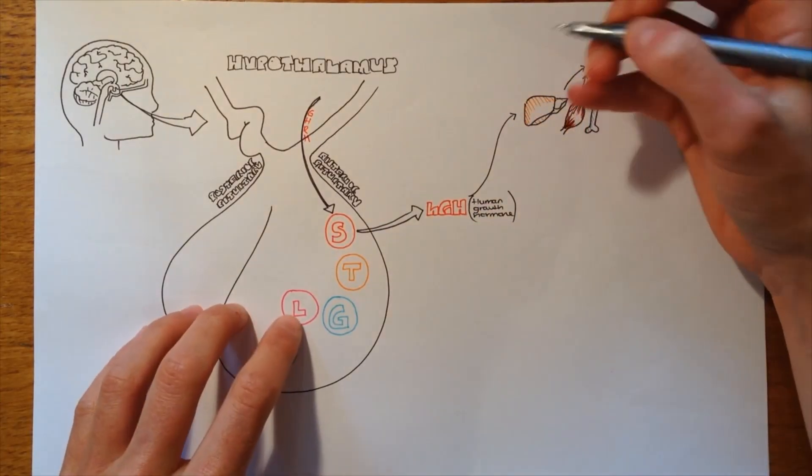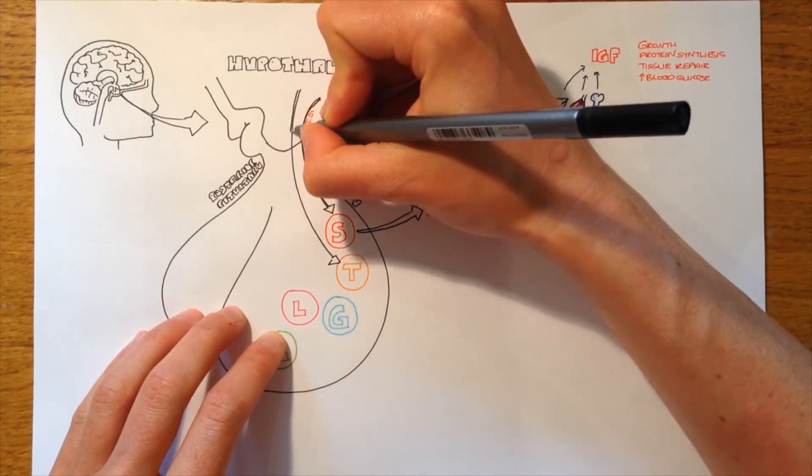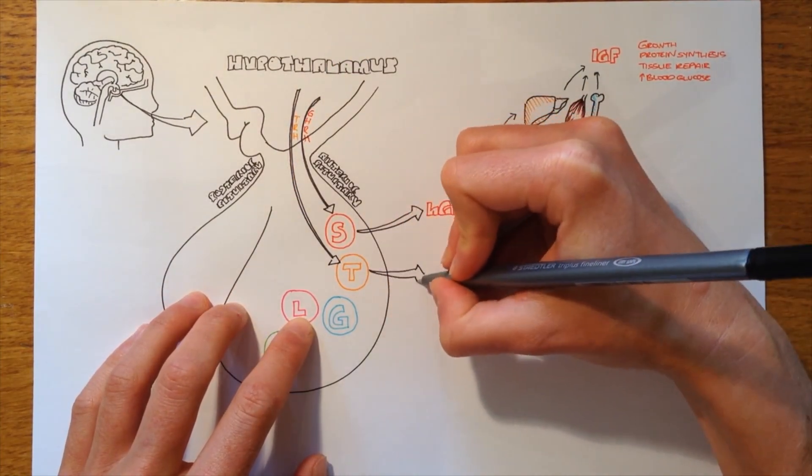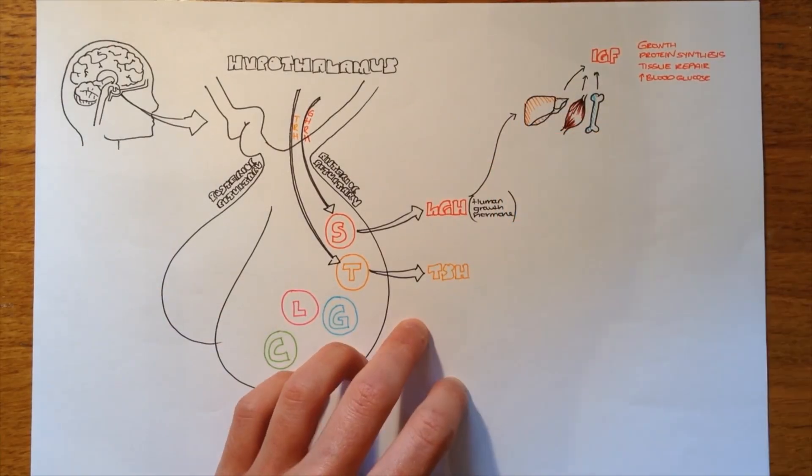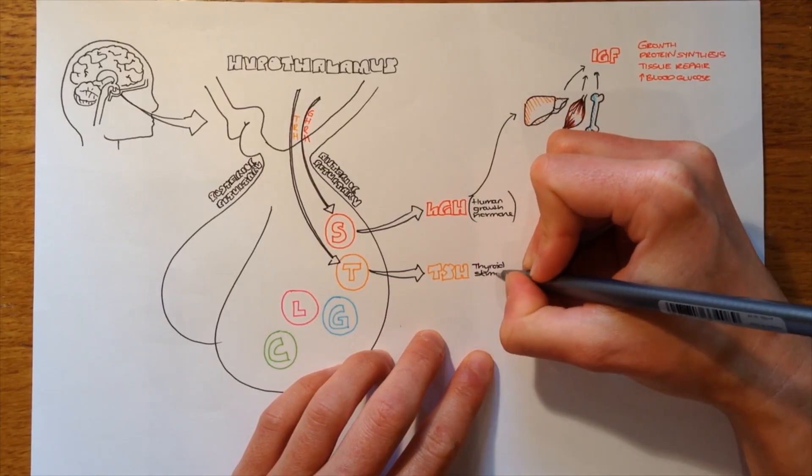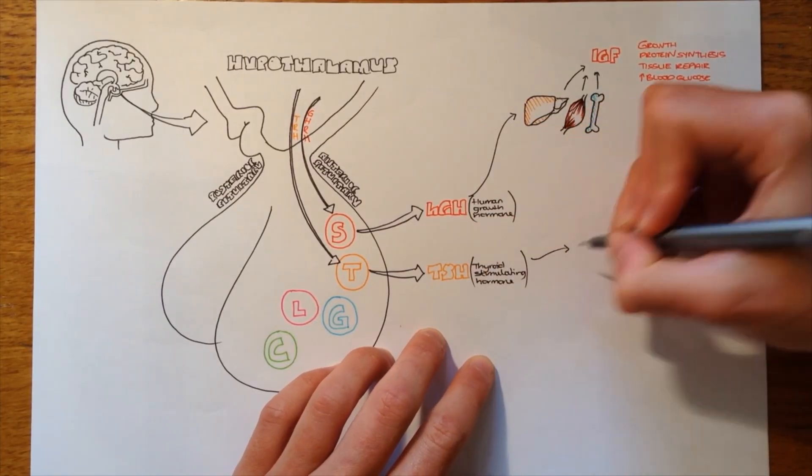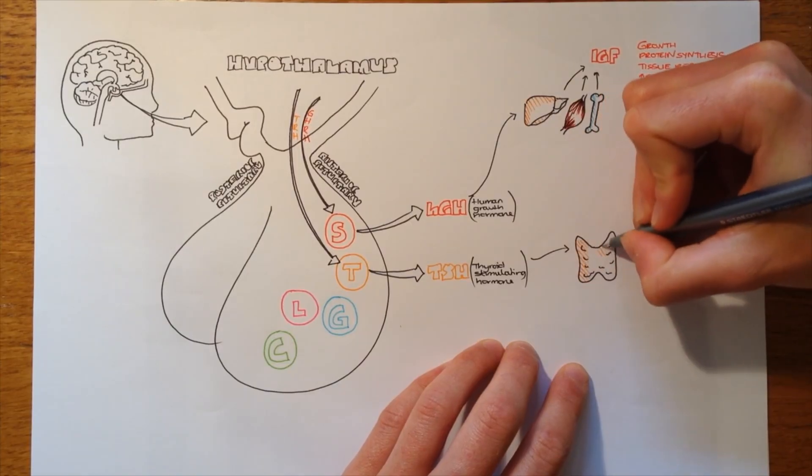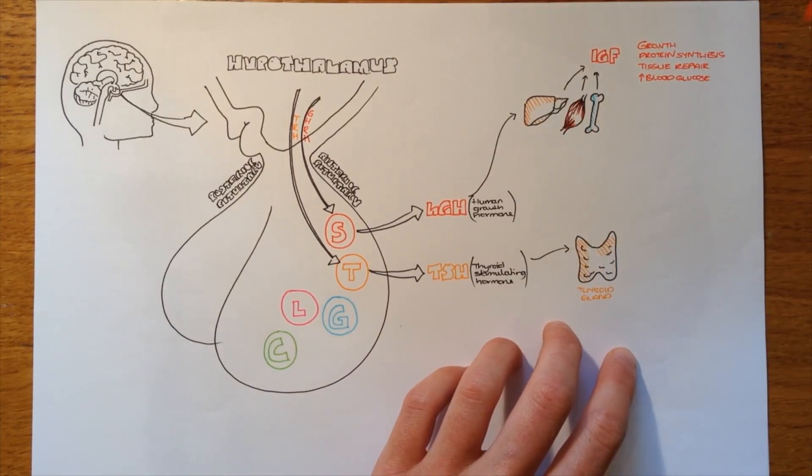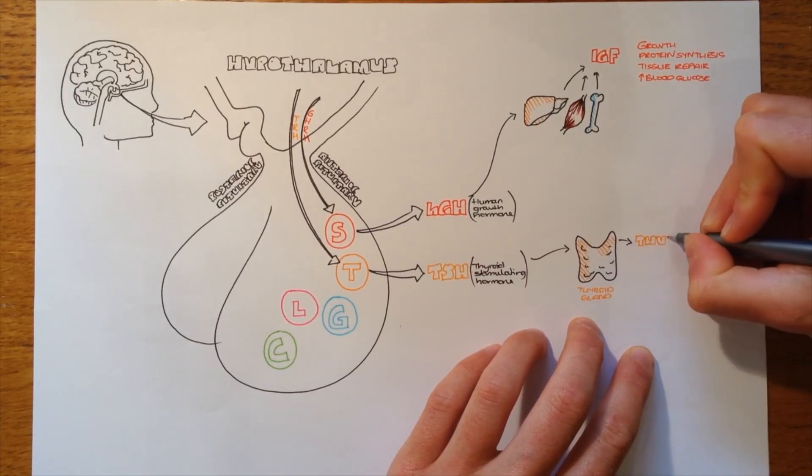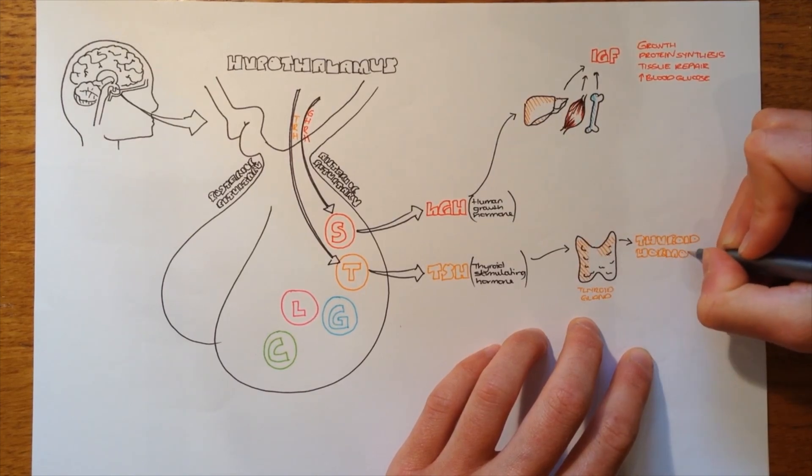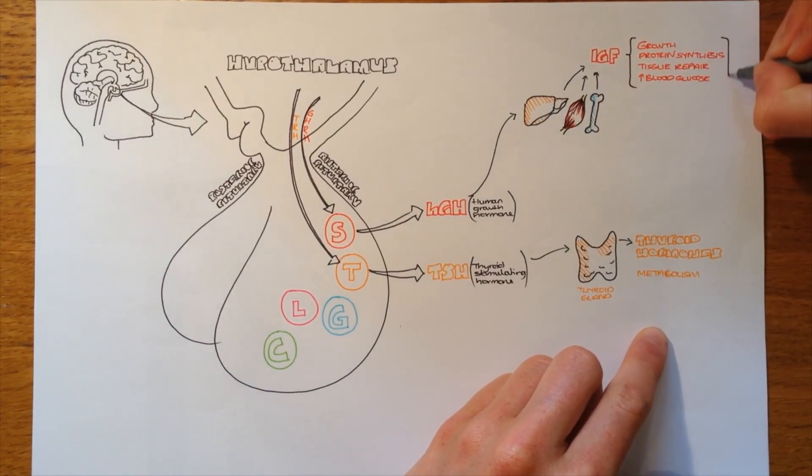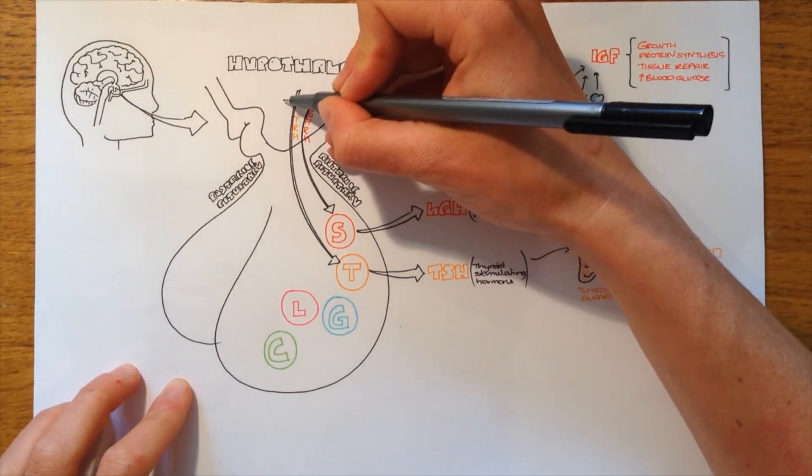And it's similar for all of the anterior pituitary hormones. The next one we're going to talk about is thyroid releasing hormone which triggers the thyrotrophs to produce thyroid stimulating hormone, TSH. And what this does is when it's released from the anterior pituitary it travels in the blood to the thyroid gland which is located in the neck, kind of on the trachea. And this then produces thyroid hormones. So again, two, I suppose you could say three-step process, starting with the hypothalamus hormone which triggers the anterior pituitary to produce the pituitary hormone, which triggers the other organ or tissue to produce the last hormone. And thyroid hormones are involved in controlling metabolism.